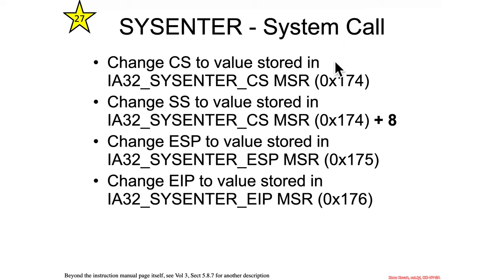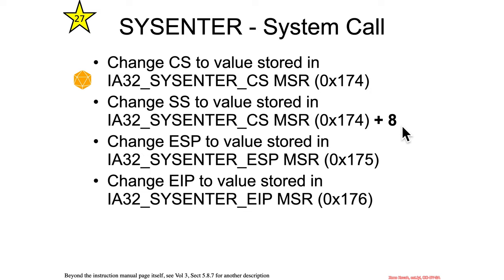How does sysenter work? There are some model-specific registers involved. The CS value gets set to the i32 sysenter CS MSR — specifically the bottom 16 bits, so MSR 0x174. SS uses the same MSR named CS, but then does that plus-8 math like we saw before with syscall. ESP gets set to whatever its MSR says, and EIP is set to whatever its MSR says.